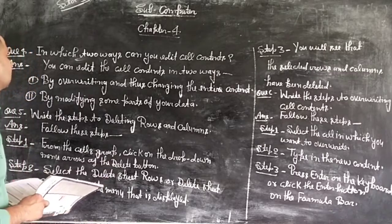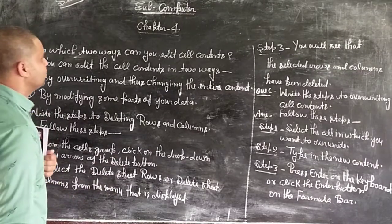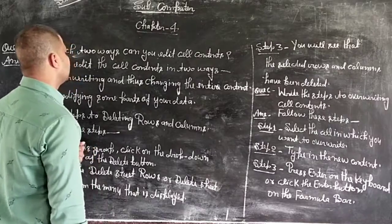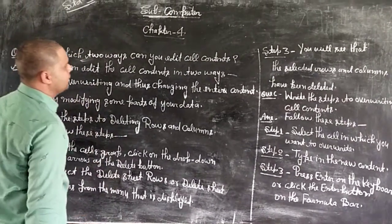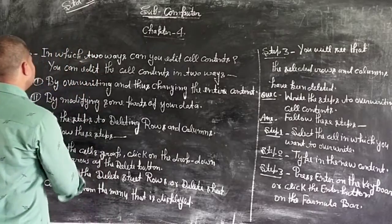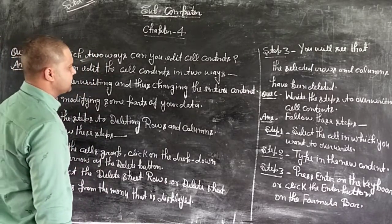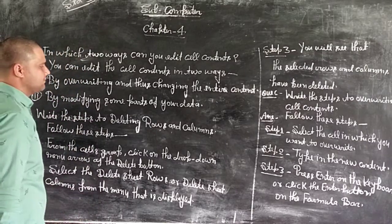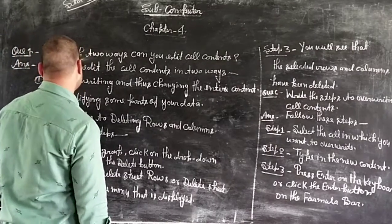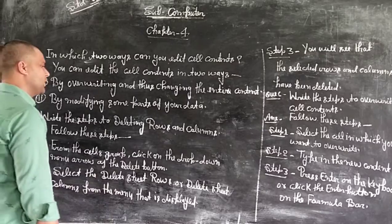Next question is: In which two ways can you edit the cell content? You can edit the cell content in two ways: by overwriting and thus changing the entire content, or by modifying some parts of your data. Write the steps to delete the row and column.